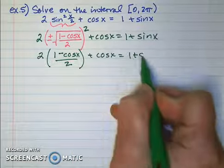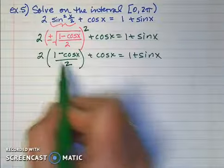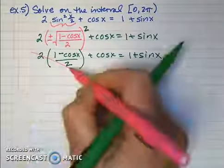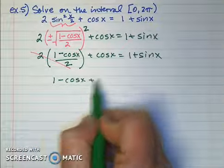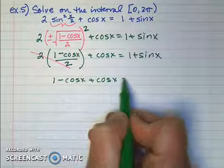Now those 2's cancel, and I'm left with 1 - cos x + cos x = 1 + sin x.